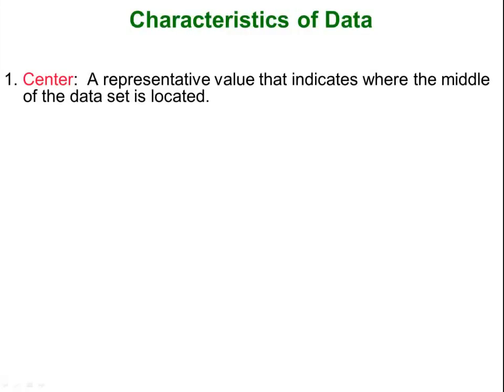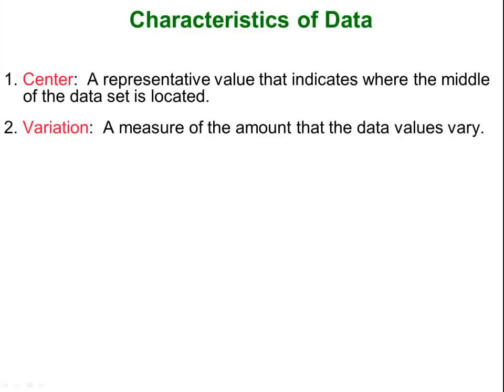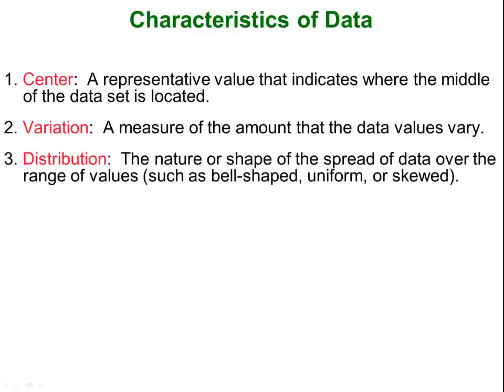We decide to display data so that we can convey characteristics of the data visually. One characteristic we might want to convey to the reader would be the center, something you guys probably have heard of as the mean or the average. Something else we might want to show would be the variation of the data — how spread out is it? What is the distance from one number to the next? Or we can look at the distribution of the data. What is the overall shape? Is it bell shaped? Is it a uniform distribution? Is it bimodal — or what some people call a dumbbell — or a two-humped camel would be a bimodal.